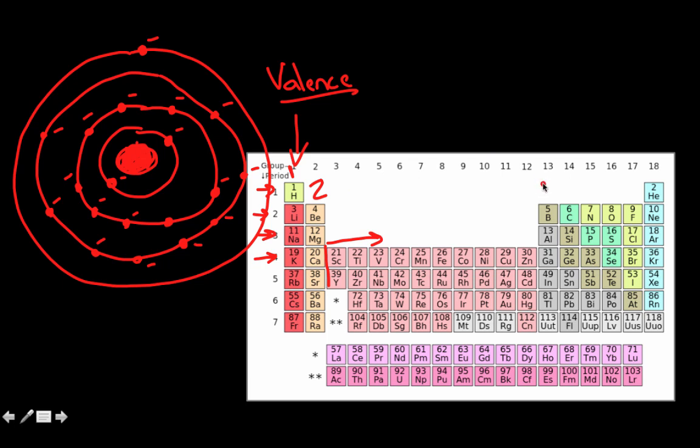Then if you go over to boron, all of these have three. Everything under carbon has four. Everything under nitrogen has five, under oxygen six, seven, and eight.